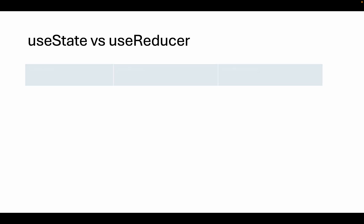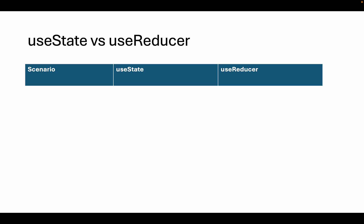Hi guys, welcome back to Future Dimensions 360. In our last tutorial we finished the deep understanding of the useReducer hook with a couple of practical examples, so we now have good knowledge of the useReducer hook. Now it's time to understand when to use the useState hook and when to use the useReducer hook. Keep in mind both these hooks are for state management.